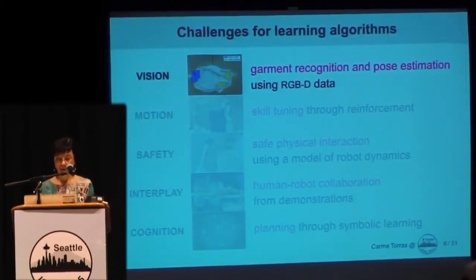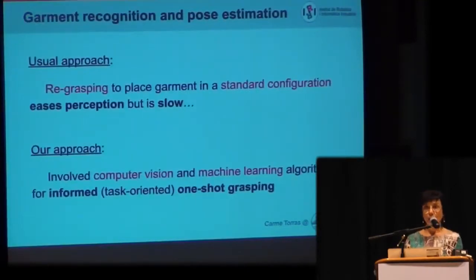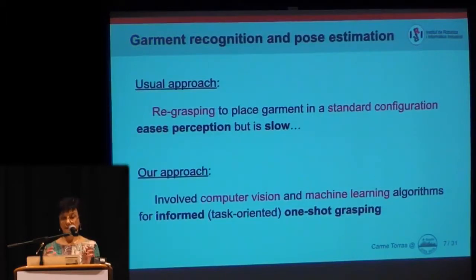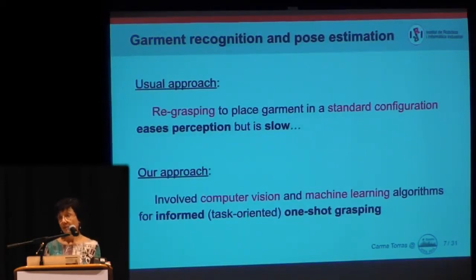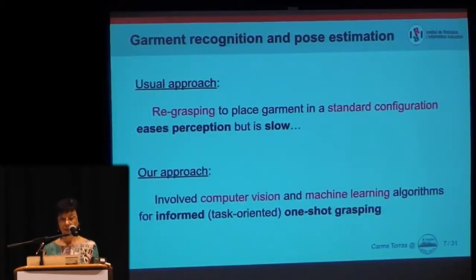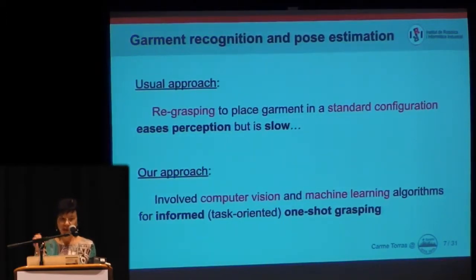Starting with the first topic, namely garment recognition and pose estimation, we have an approach that we call informed grasping. When you like to perceive and determine the pose of a piece of clothing, the usual way is to do a lot of re-grasping in order to get it to a standard configuration. This requires a lot of perception, but may be very slow. Therefore, we have an alternative approach that tries to do just one-shot grasping, and for this we use more involved computer vision and machine learning algorithms. This one-shot grasping is intended to perform a task, and thus the grasping has to be in a particular part of the garment.